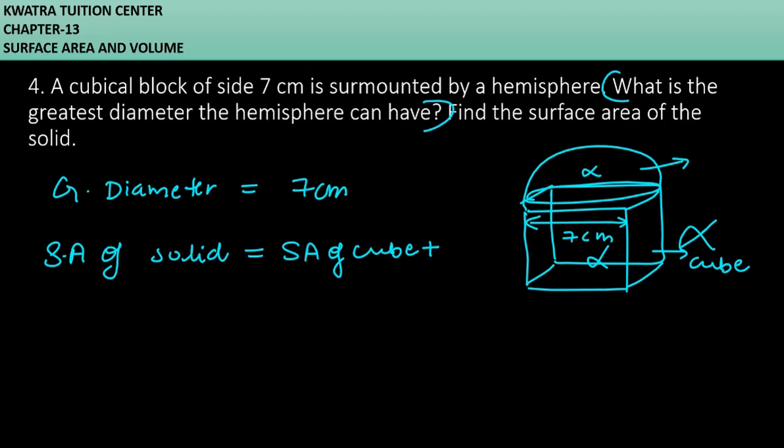So here we will find the surface area of the cube, plus CSA of the hemisphere, and subtract the area of the base hemisphere. Now what are we going to do here? Let's place some values and we'll find the final answer.